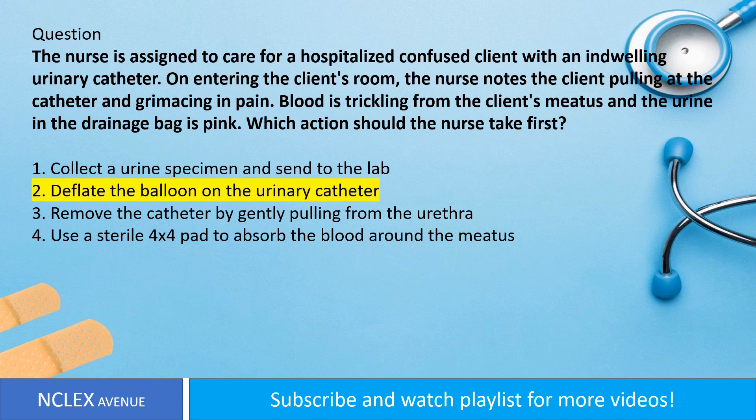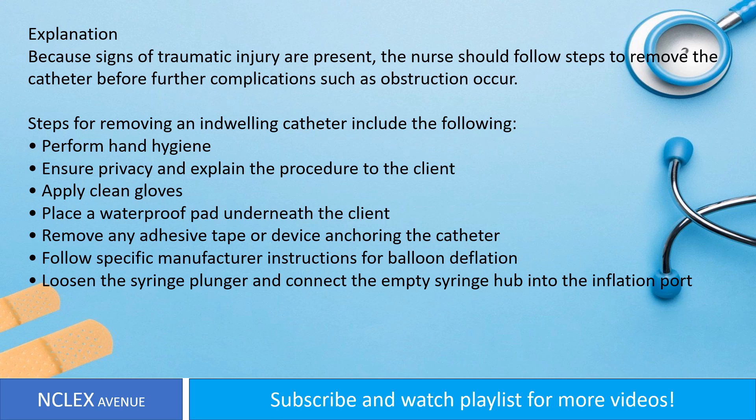Answer. Option 2 is correct. Explanation: Because signs of traumatic injury are present, the nurse should follow steps to remove the catheter before further complications, such as obstruction, occur. Steps for removing an indwelling catheter include the following: perform hand hygiene, ensure privacy and explain the procedure to the client, and apply clean gloves.